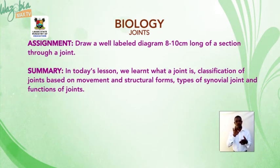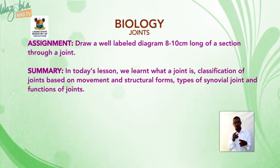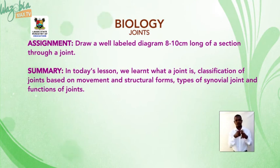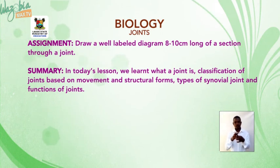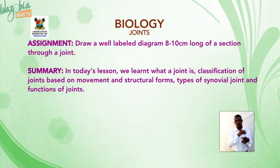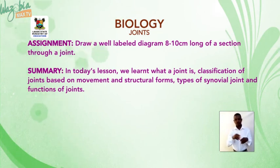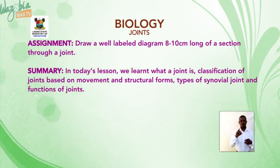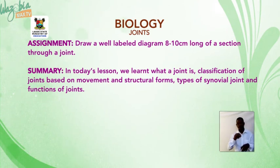Assignment: draw a well-labelled diagram, 8 to 10 cm long, of a section through a joint. Summary: in today's lesson we learned what a joint is, description of a joint, description of the structure of a joint, classification of joints based on movement and structural forms, types of synovial joints, and functions of joints.